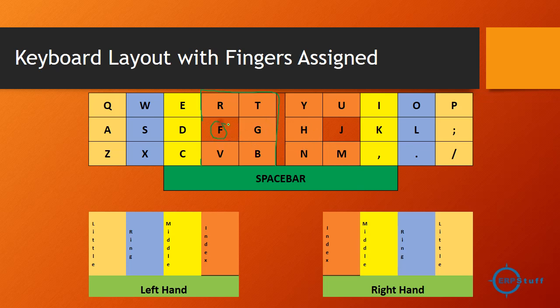I kept F and J in a different color because they have a raised point on both buttons, on which you have to rest your index fingers. So even if you do not look at your keyboard, if you touch F and J with your fingers you will find a raised point there, and you will know — okay, this is F and this is J — to align your fingers correctly.